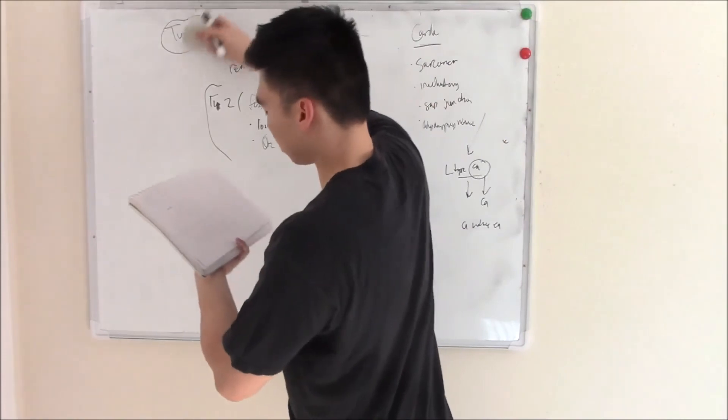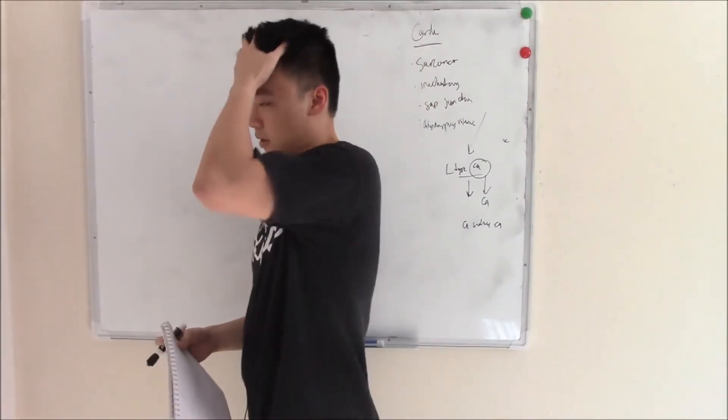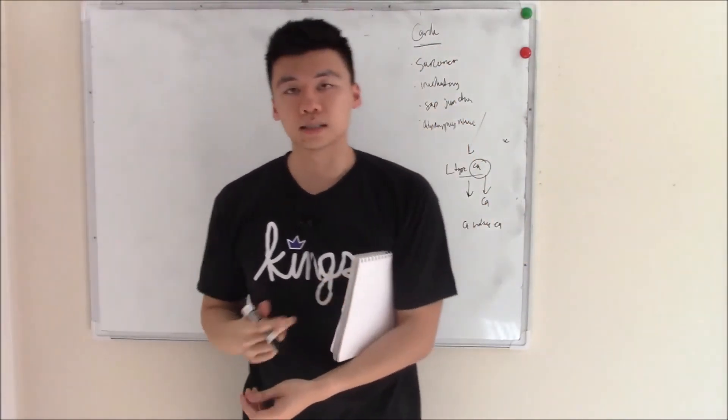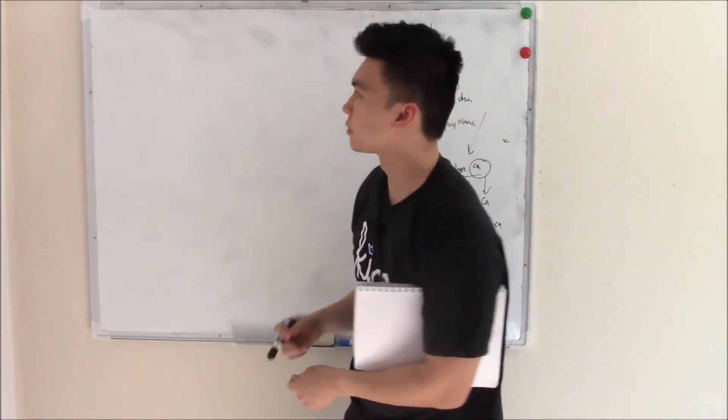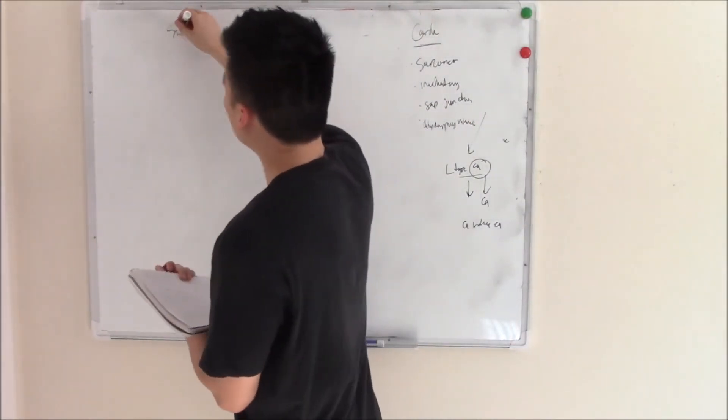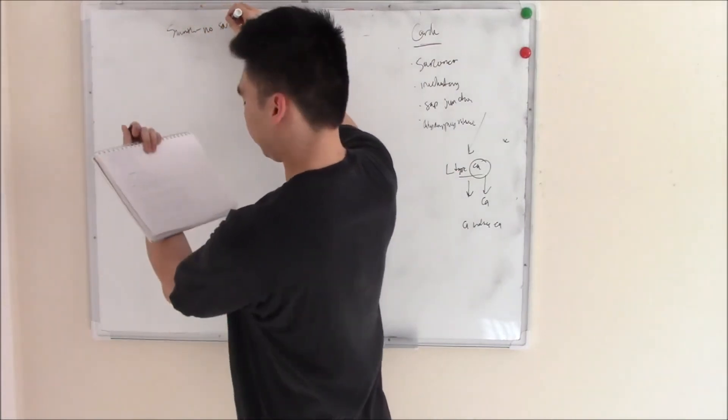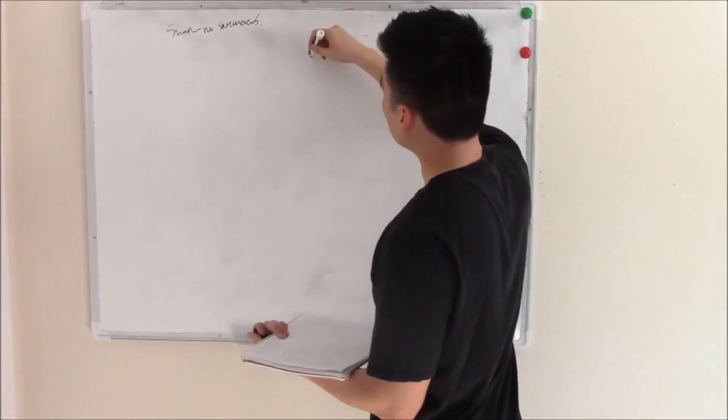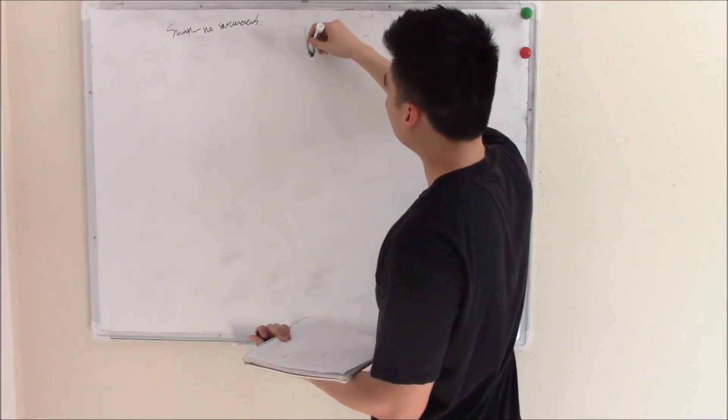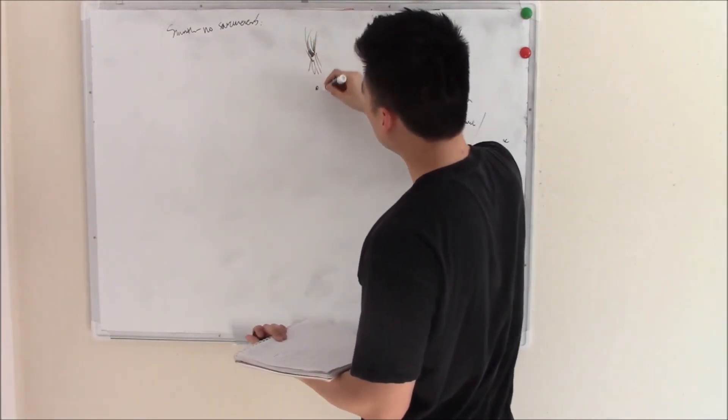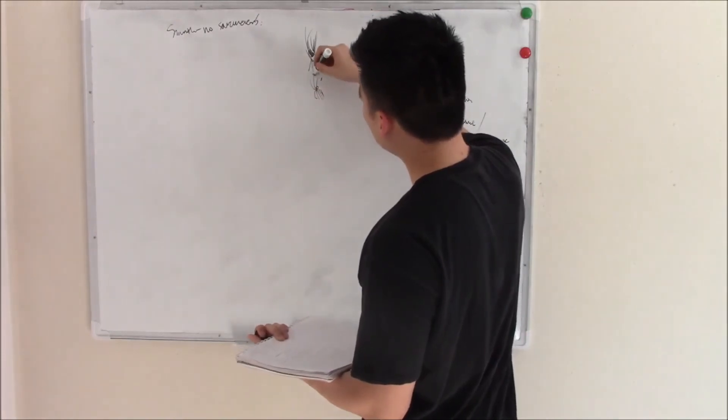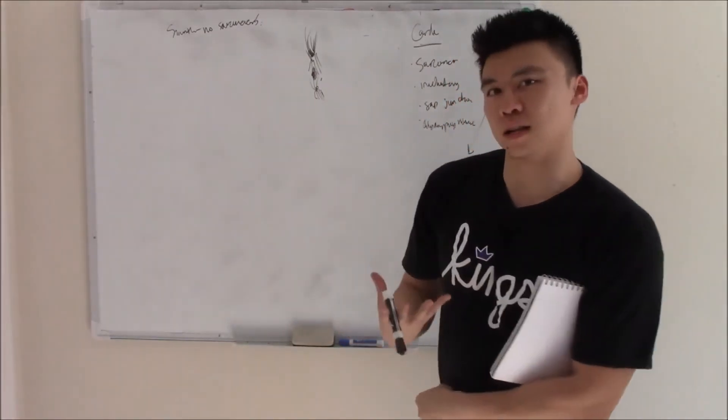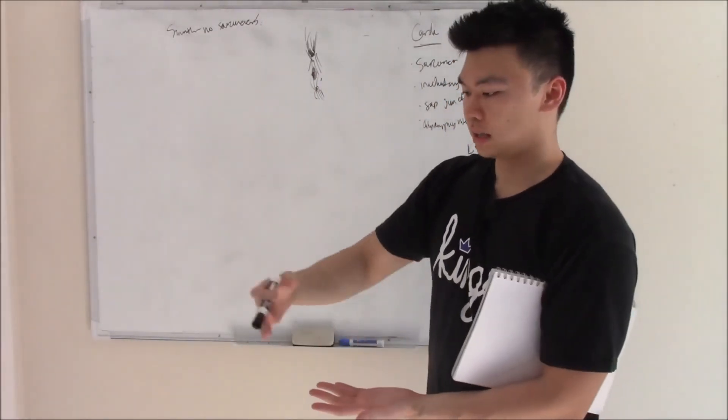Smooth muscle shares similarities with both. It's involuntary like cardiac and has gap junctions because they need to coordinate. However, it doesn't have sarcomeres. Instead, it has this dense body with all these actin filaments, and your thick filaments kind of in the middle. It's less organized, so you don't see that sarcomere or those striations.